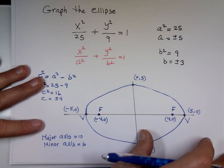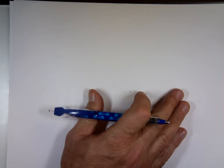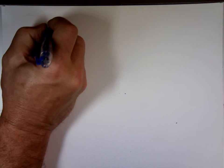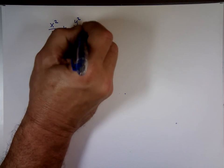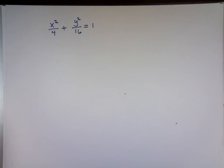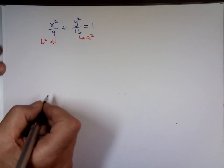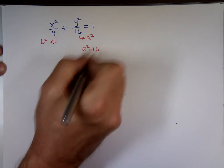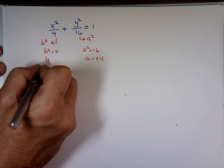Let me try another one. We have X squared over 4 plus Y squared over 16 equals 1. Which number is bigger — the 4 or the 16? 16. So 16 is your A squared and 4 is your B squared. A squared equals 16, so A equals plus or minus 4. B squared equals 4, so B equals plus or minus 2.